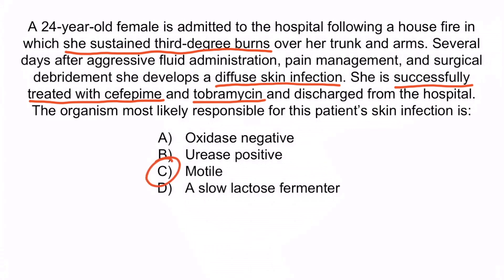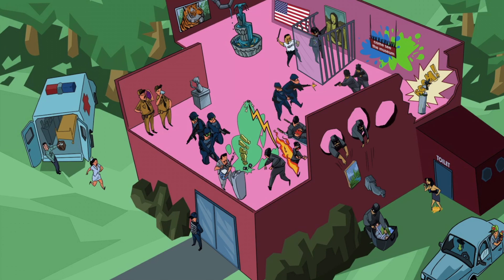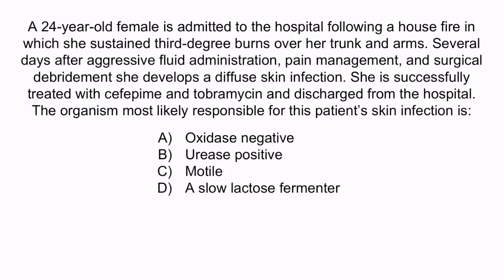The correct answer is C — the organism is motile. From the image, recall that the flag is included to help you remember that Pseudomonas is a flagellated, motile organism. The guy getting burned should have helped you remember that Pseudomonas is associated with burn victims. The pine tree and the minnows in the fountain should have helped you remember that Pseudomonas can be treated with cefepime and aminoglycosides such as tobramycin. A, B, and D are not characteristics of Pseudomonas — Pseudomonas is oxidase positive, urease negative, and does not ferment lactose. So again, the correct answer is C, motile. And with that, we've covered everything you need to know about Pseudomonas aeruginosa.